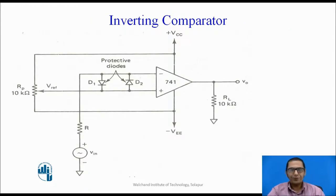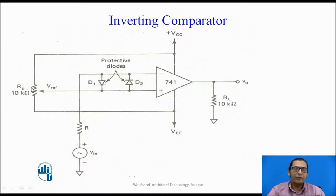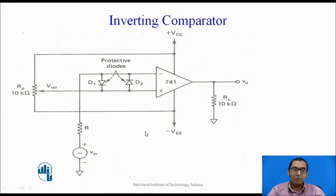The next circuit is the inverting comparator, which is very similar to the non-inverting comparator, with the difference that the fixed voltage is now applied to the non-inverting terminal and the varying sinusoidal signal is applied to the inverting terminal. In this circuit, a variable resistor is used so that the signal applied to the non-inverting terminal can be of any polarity — positive or negative — depending on the position of the varying arm. In the inverting comparator, the fixed voltage is connected to the non-inverting terminal and the variable input is connected to the inverting terminal.